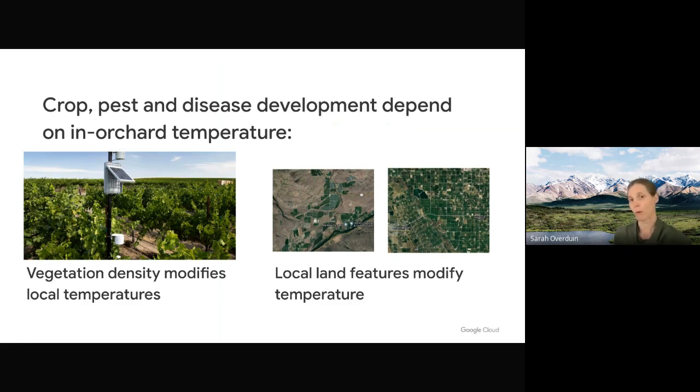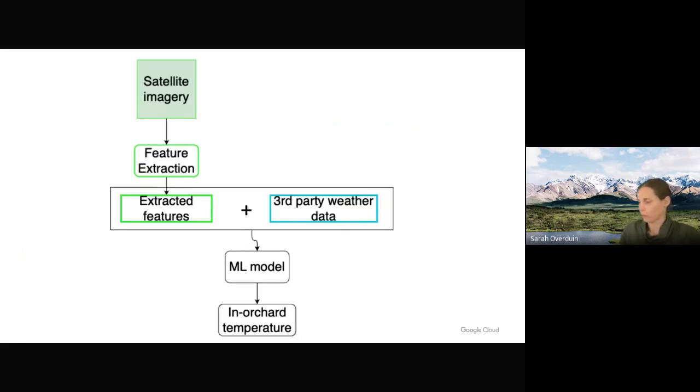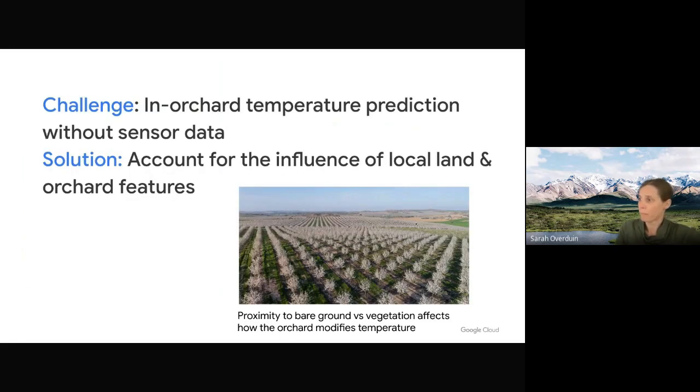Some areas have a lot of lush vegetation around them. Other areas, we have a lot of bare areas, barren areas. And how an orchard modifies the temperature depends on these local features, and these are often not captured in third-party weather services. So in this example here, we have some parts of the orchard that are near to very bare ground, and other parts of the orchard, which when it's in full season, will be very lush. And there will be differences in how these parts of the orchard will modify the temperature.